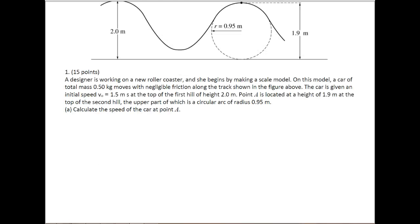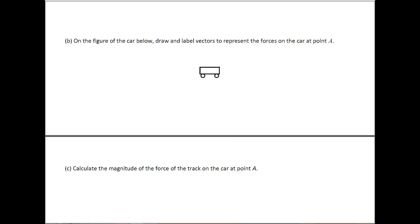If we look at part B, part B wants us to draw and label all the forces on the car at point A, so it's at the top of that loop. So we know that going straight down is always our good friend MG, and going straight up is our good friend N, because there is a cart track here. There's a normal force that points up. So you get two points for doing that correctly.